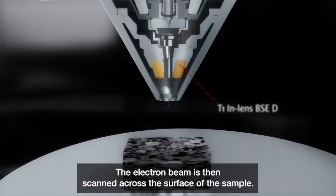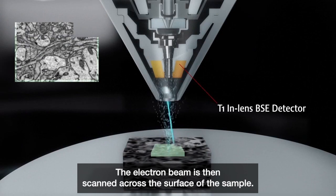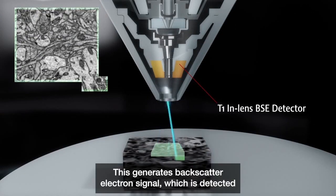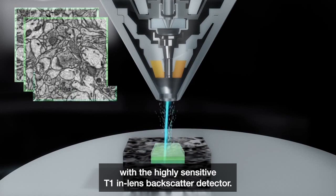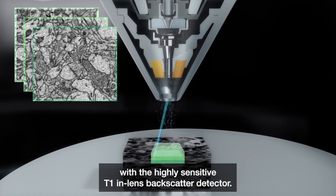The electron beam is then scanned across the surface of the sample. This generates backscatter electron signal which is detected with the highly sensitive T1 in-lens backscatter detector.